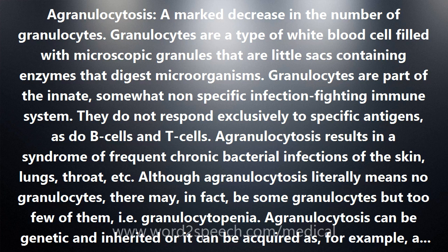Agranulocytosis can be genetic and inherited, or it can be acquired — as, for example, an aspect of leukemia. Neutrophils, eosinophils, and basophils are all types of granulocytes.